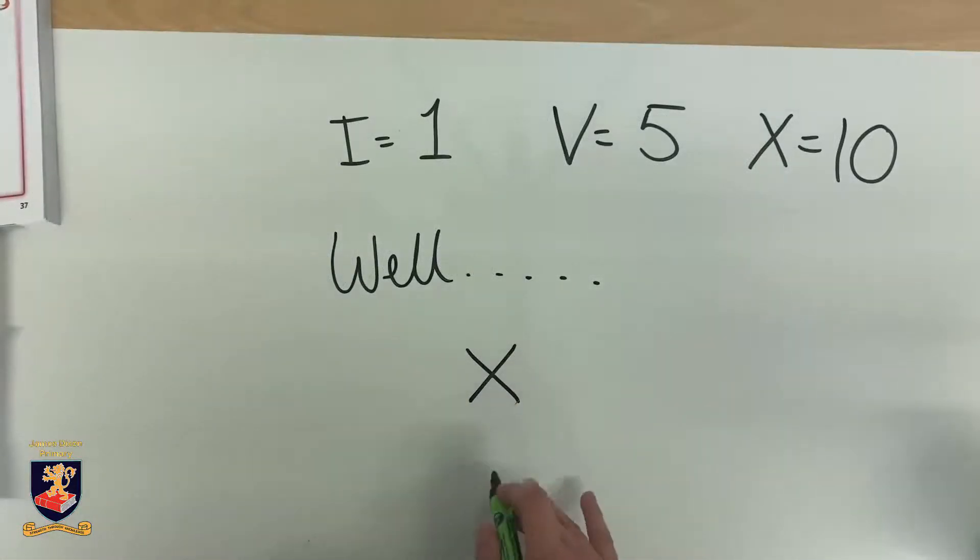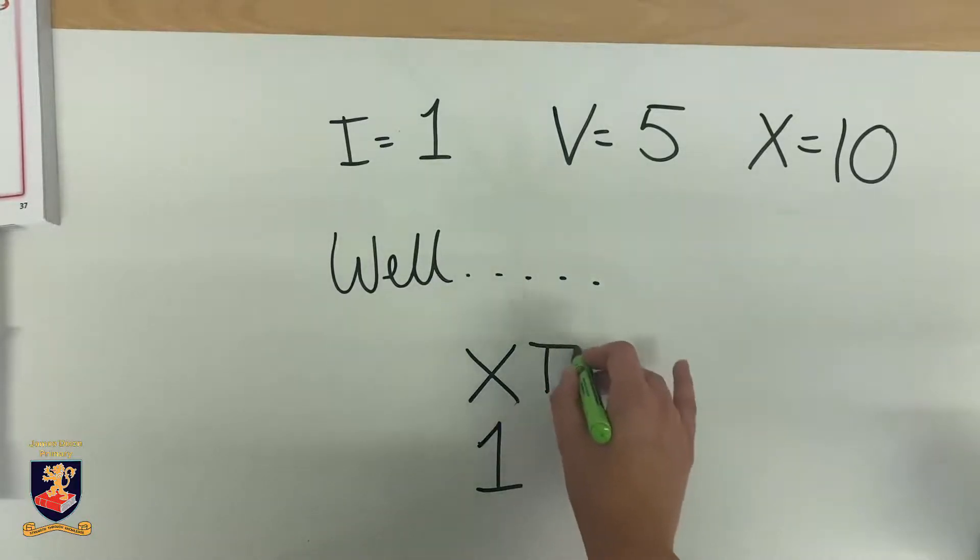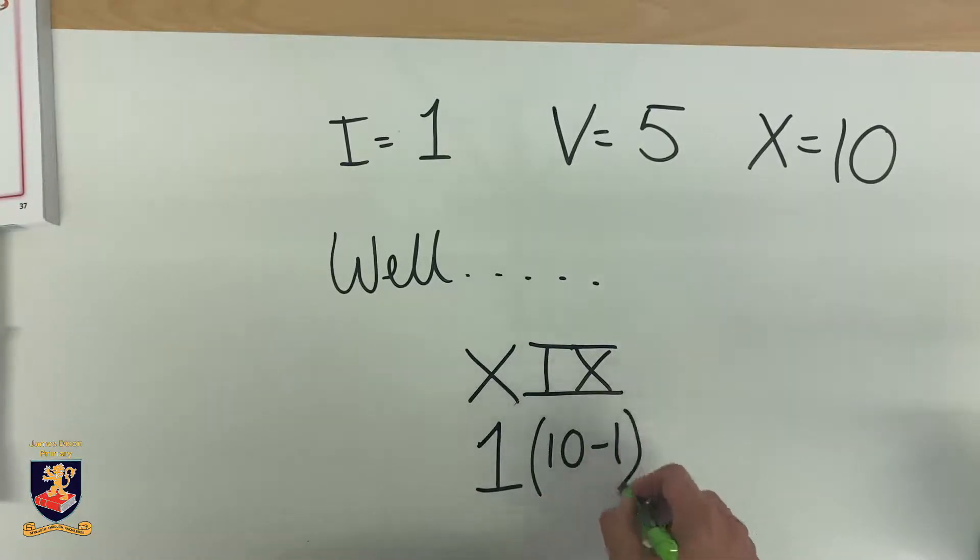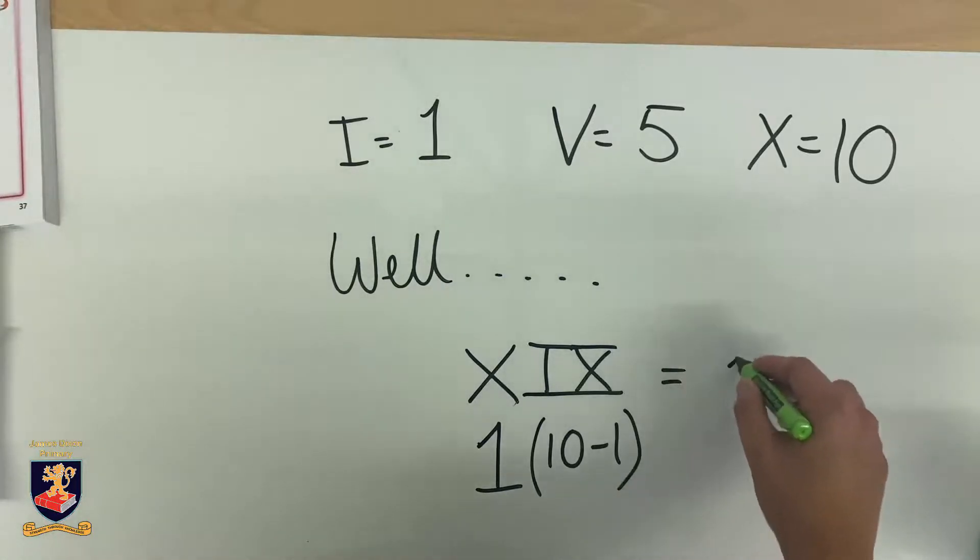When it comes to nineteen, we know we need ten, which is X, and then we need nine, which is IX. This shows us we have one less than ten, which is nine. So our number nineteen in Roman numerals is XIX.